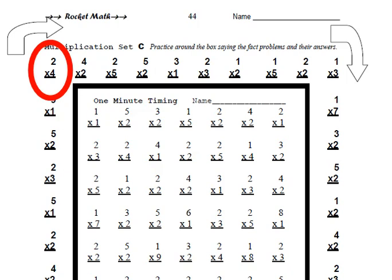So they would start in the corner here and they would say: two times four is eight, four times two is eight, two times five is ten, five times two is ten, three times one is three, two times three is six, one times two is two, one times five is five, two times two is four, one times three is three, one times seven is seven, three times two is six. And they would continue on around the outside perimeter of the sheet.